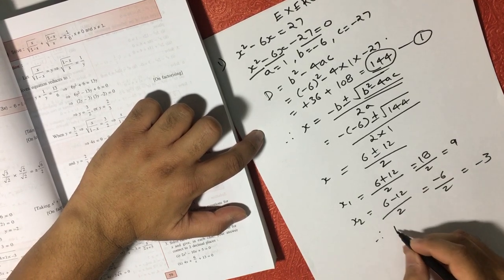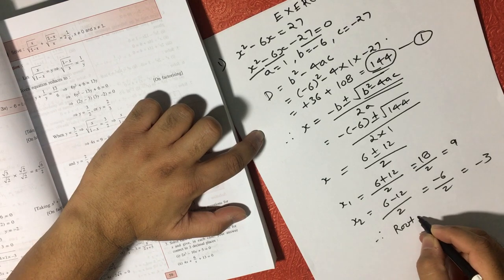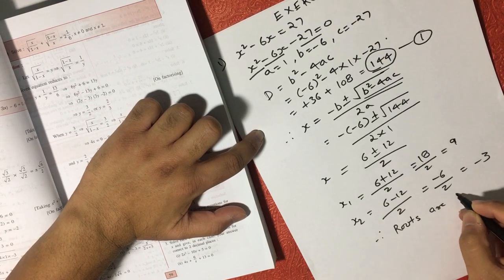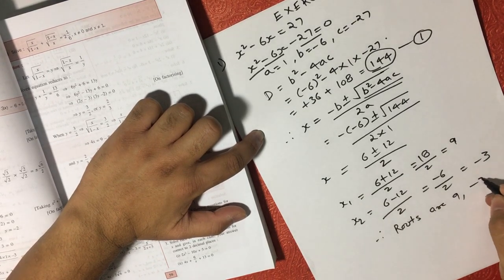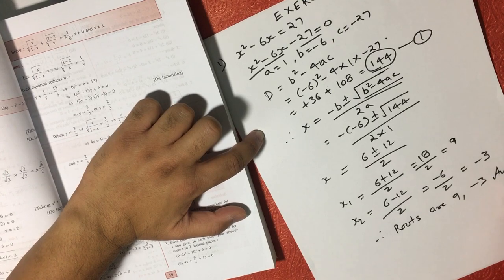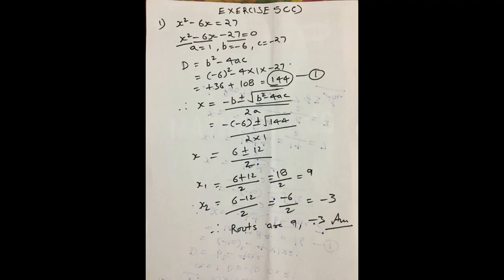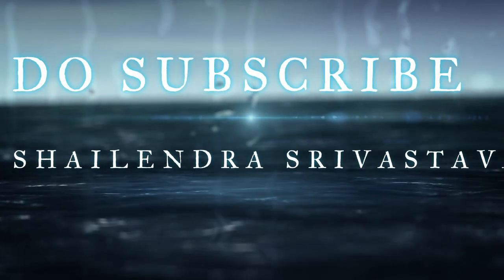So that will become minus 6 over 2, which is equal to minus 3. Therefore, the 2 roots are: one is 9 and one is minus 3. That is your answer. Thank you.